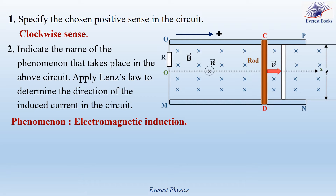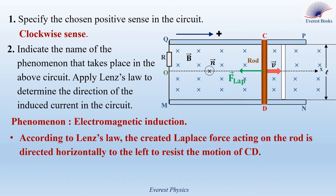Starting with the first step: when a straight conductor carrying a current is placed in an external magnetic field, it experiences a force called the Laplace force. According to Lenz's law, the Laplace force is directed horizontally to the left, to resist the motion of wire CD — that is, to oppose the cause that produces the current. So the Laplace force is directed horizontally to the left as shown on the figure.